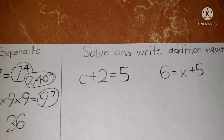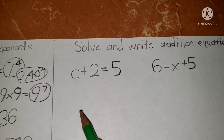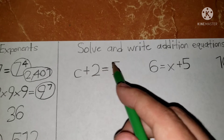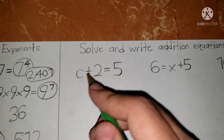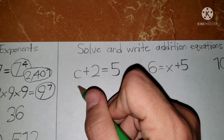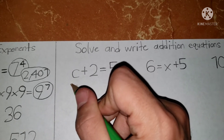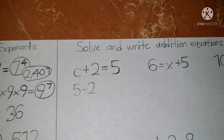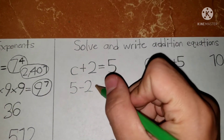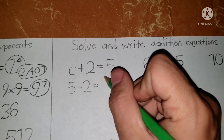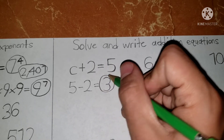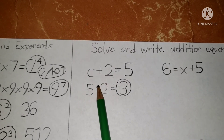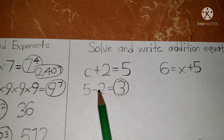For example, you have c plus two equals five. How do you get the final answer? Well, you make it the opposite. So c plus two equals five — you do five minus two, making it from positive to negative. The final answer would be three. Again, c plus two equals five: you change from positive to negative and you get the final answer.